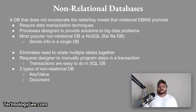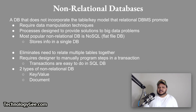A non-relational database is a database that does not incorporate the table-key model that relational database management systems promote. These databases require data manipulation techniques designed to provide solutions to big data problems that big companies face. The most popular emerging non-relational database is called NoSQL, also known as a flat file database. This type stores information in a single database, eliminating the need to relate multiple tables together. However, it requires the designer to manually program the steps in a transaction. There are two types of non-relational databases: key-value and document databases.